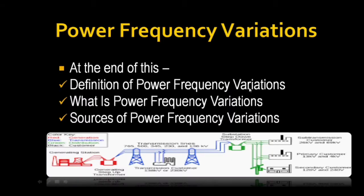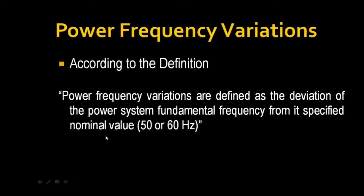The sources of power frequency variations — in general, our power system standard frequency is 50 Hz. According to the American standard, frequency is 60 Hz.